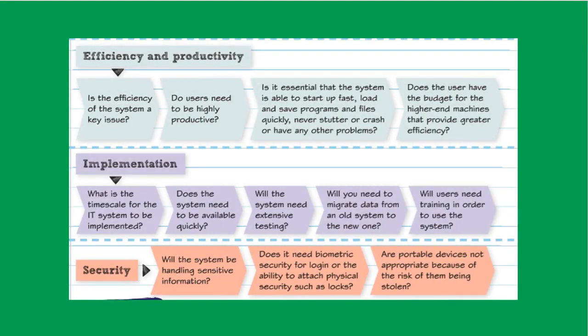The next factor you can talk about is efficiency and productivity. When you discuss this, you need to link it to the user's needs and what they're using the IT system for. Going back to the graphics designer example, this is a factor he might think about more than other users, because he's moving around bigger files and will need a more powerful, higher-end machine.